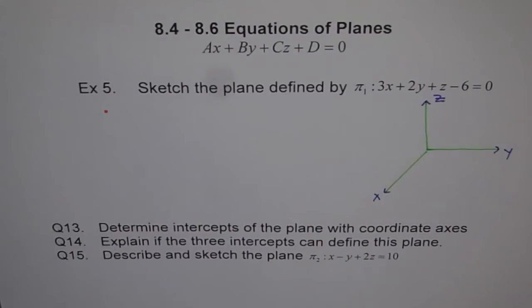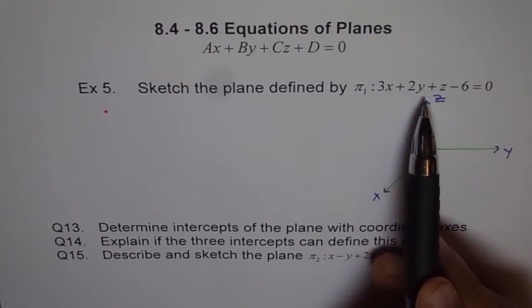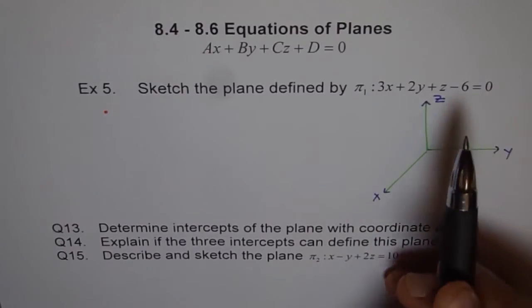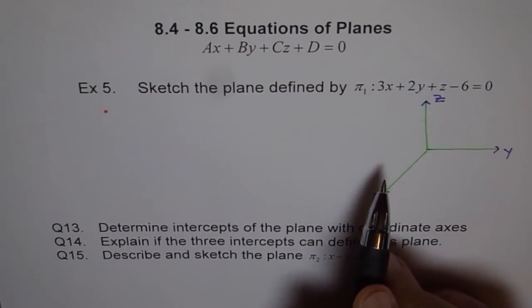Now, here is another sketch of the plane. And after this, we will get into the equations of planes. That is section 8.4. Now, let's go through this. 3x plus 2y plus z minus 6 equals 0. So, how to sketch this particular plane?